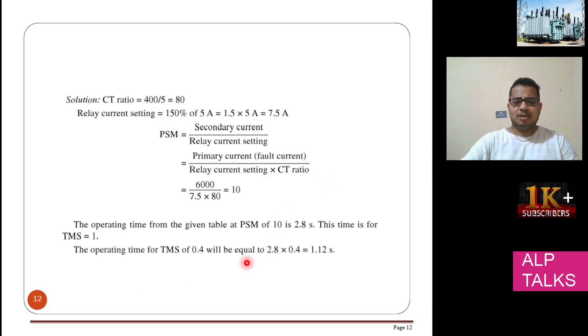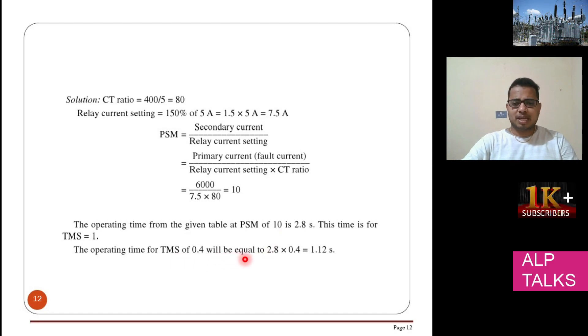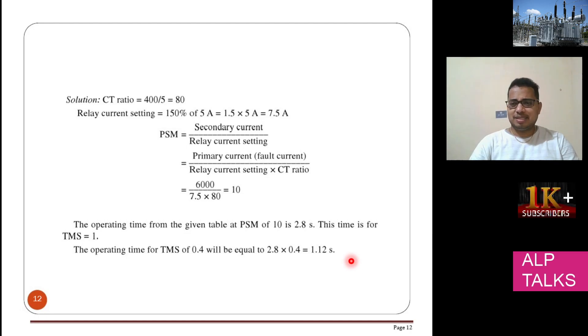The operating time with TMS of 0.4 will be 2.8 × 0.4 = 1.12 seconds. This is one of the basic problems that gives you an actual feel of how the relay operates.